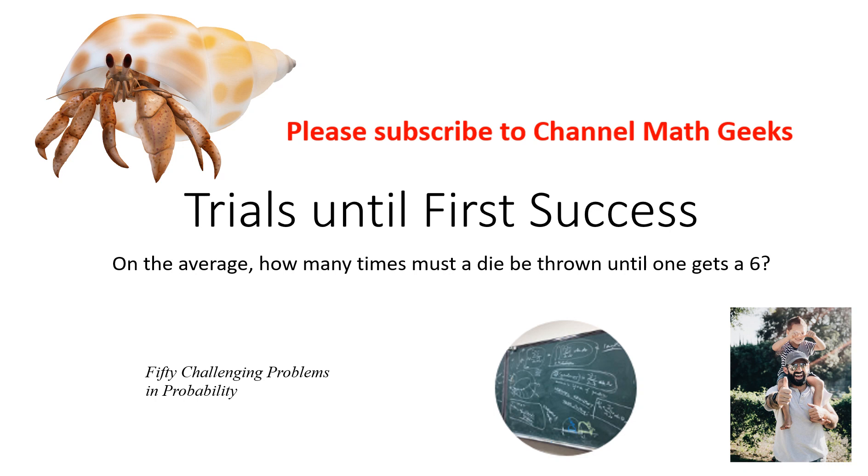Today I want to talk about trials until first success. This is an easy problem: on average, how many times must a die be thrown until one gets a six?